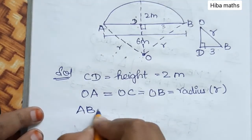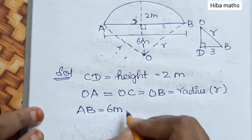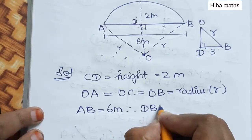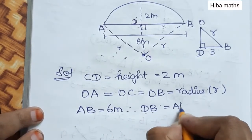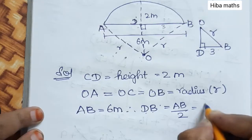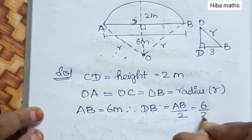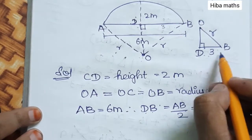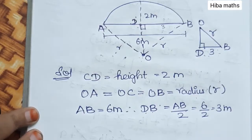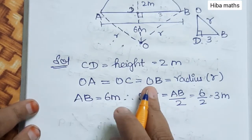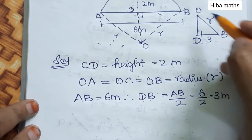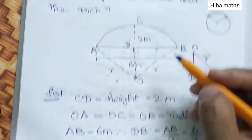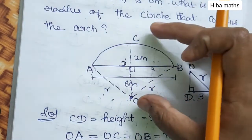AB is 6 meter, therefore DB equals AB divided by 2, which is 6 by 2, equal to 3 meter. OB is the radius. OD is the distance from center O down to point D.